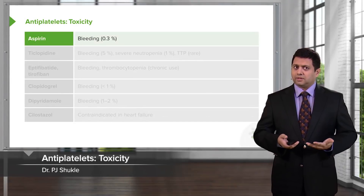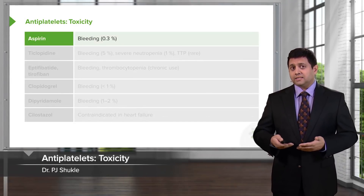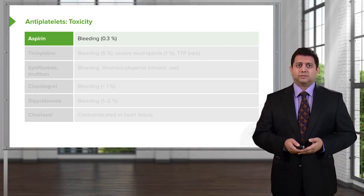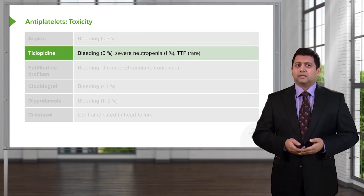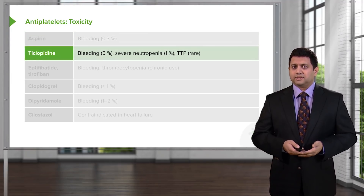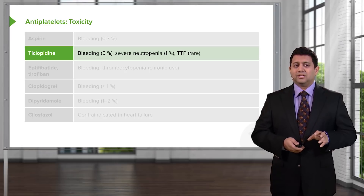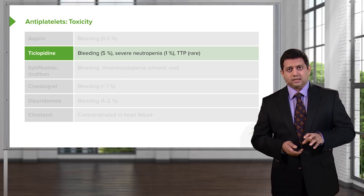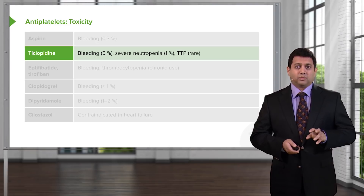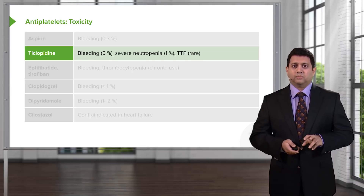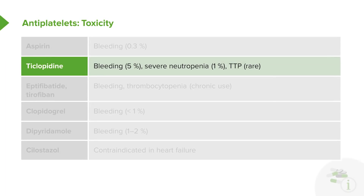In terms of toxicity, these drugs are not insignificant. Aspirin has a bleeding rate of about 0.3%, or 3 per 1,000. Ticlopidine has a bleeding rate of about 5%, but also a 1% rate of severe neutropenia. Ticlopidine is a drug you only need to know for exams because we don't use it anymore. Thrombocytopenic thrombotic purpura is a rare complication; severe neutropenia is a common complication at 1%.